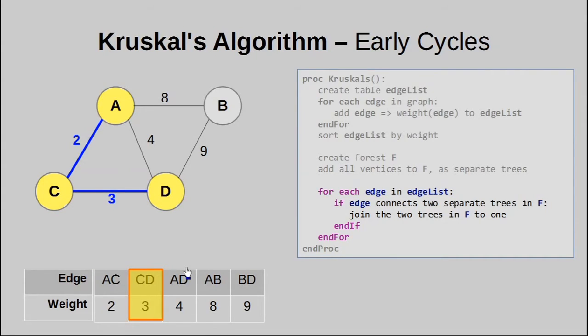But look at what happens when we go to AD. We cannot pick this, and obviously the algorithm is not ready to terminate yet, because our tree has not extended its way over to B. But we cannot pick this edge, because that creates a cycle here.